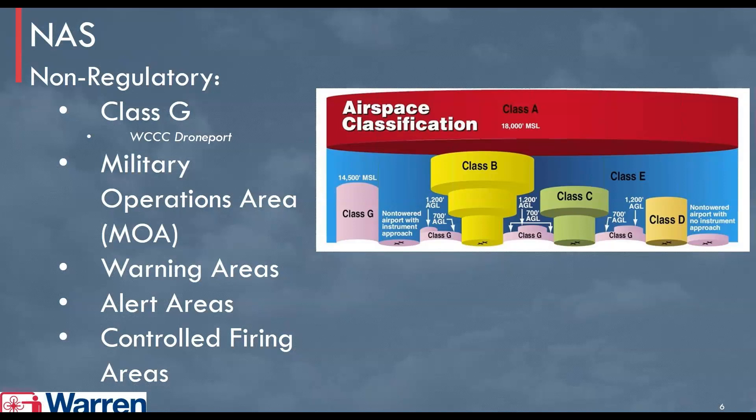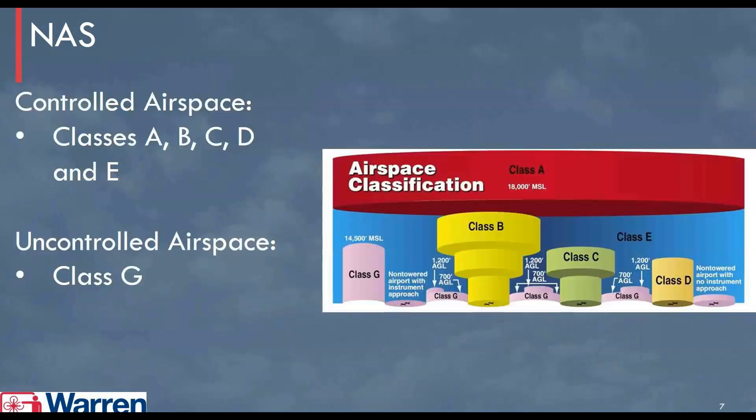Other non-regulatory areas where you can get permission to fly may be a military operation area. You would look at the back of your sectional chart or Google the military operation area and make a phone call to see if you could get permission to operate there. There are also warning areas, alert areas, and controlled firing areas. All of these are not necessarily regulated, but you'll want to be aware of them in the National Airspace System.